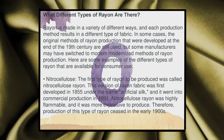Rayon is made in a variety of different ways, and each production method results in different types of rayon. In some cases, the original methods of rayon production developed at the end of the 19th century are still being used. The first type of rayon to be produced was called nitrocellulose rayon. This version was first developed in 1855 under the name of artificial silk and went into commercial production in 1891. Nitrocellulose rayon was highly flammable and more expensive to produce, and therefore production of this type of rayon ceased.